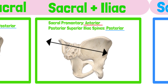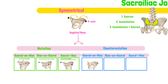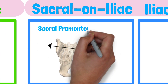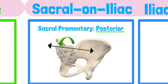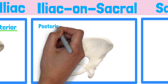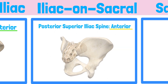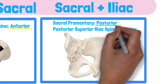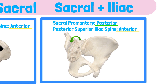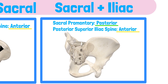Now let's examine counter-nutation. Sacral motion during counter-nutation occurs by the posterior displacement of the sacral promontory in relation to the innominates. Innominate movement during counter-nutation occurs by the anterior displacement of the posterior superior iliac spines in relation to the sacrum. Counter-nutation can be achieved by the movement of the sacrum and the innominates together — observe the sacral promontory move posterior and the posterior superior iliac spines move anterior.